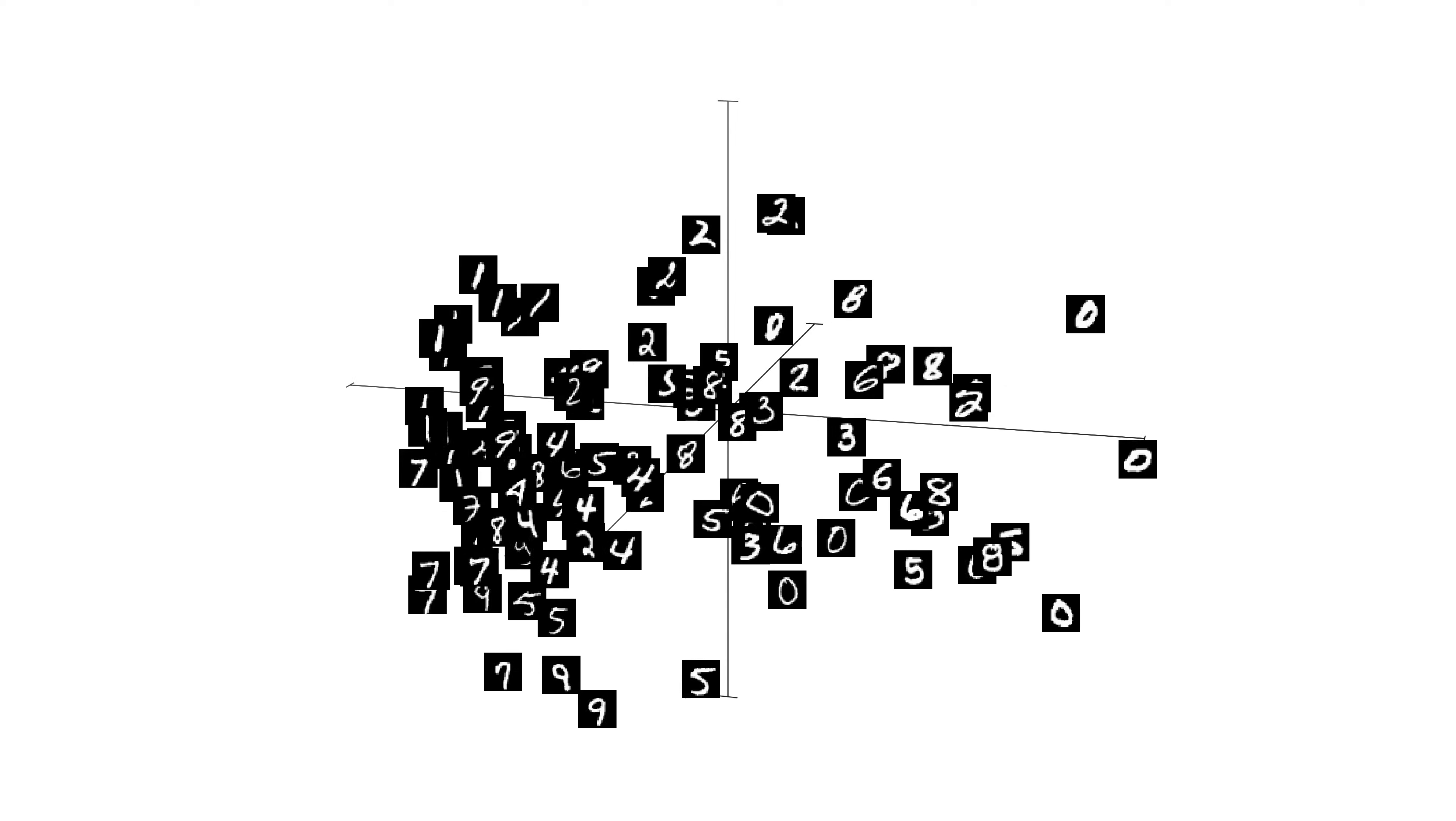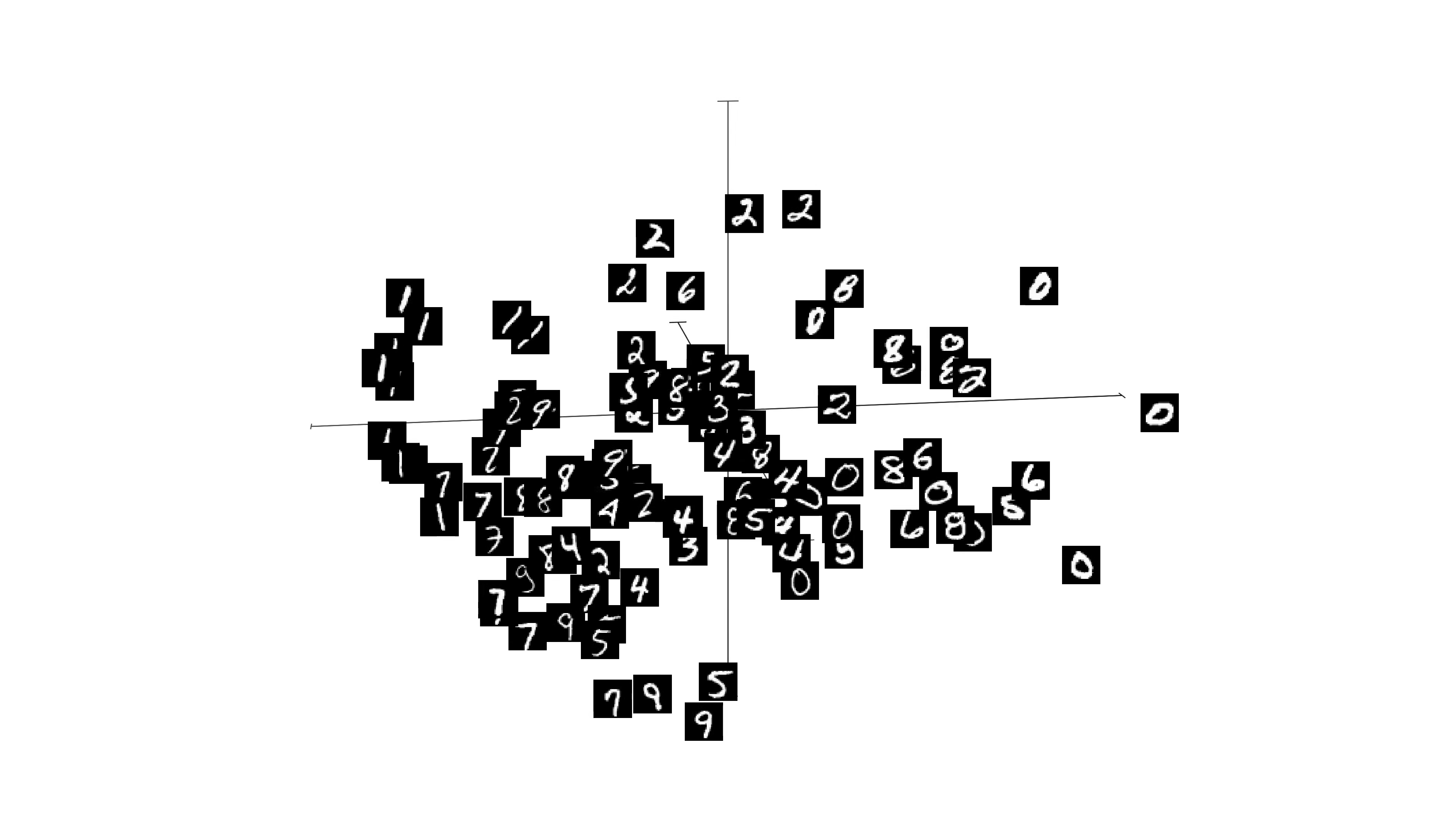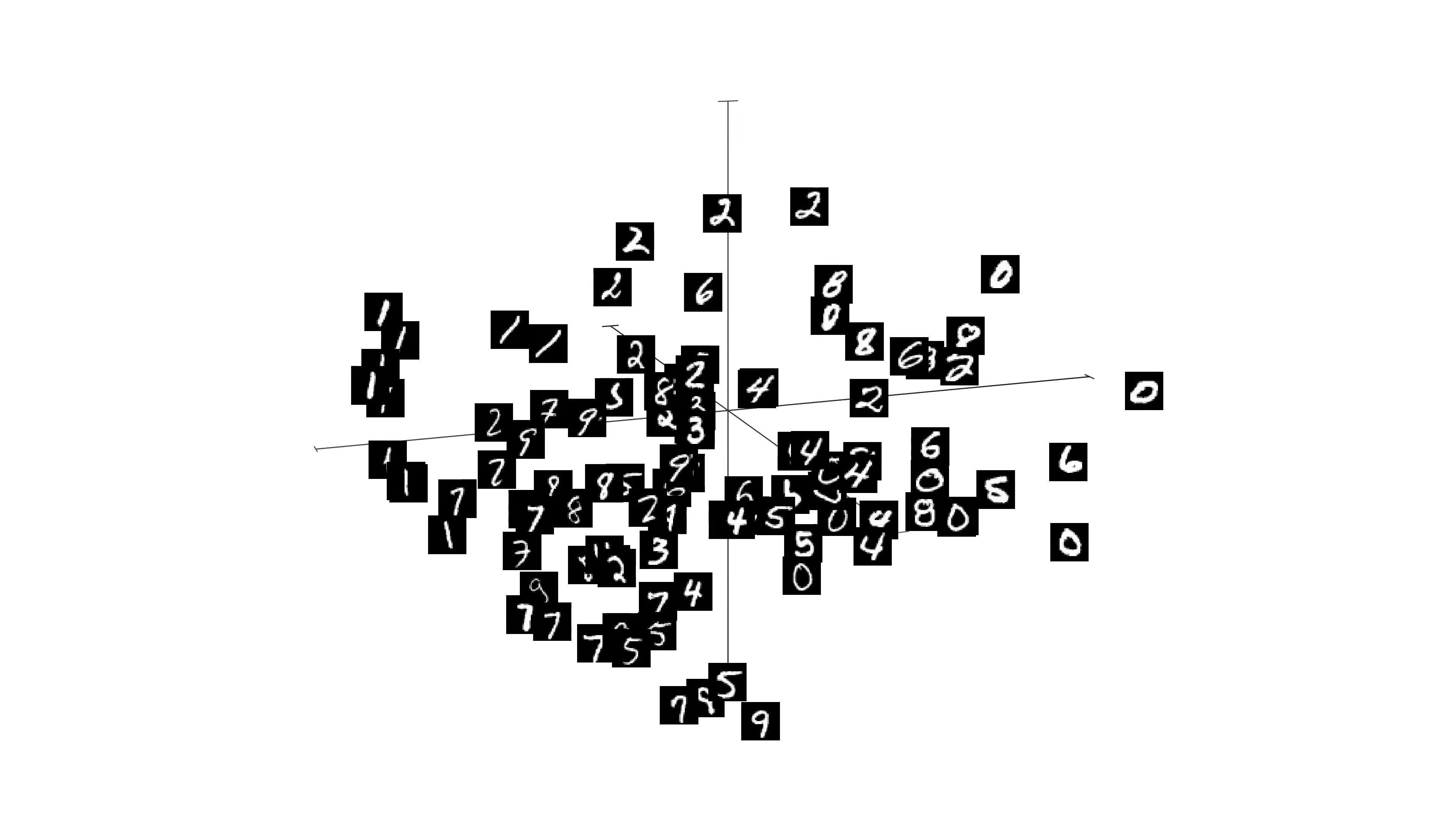You don't need to understand PCA, but it basically linearly projects the data to a lower dimension such that it maintains the maximum amount of variability or structure. Now let's see the neural network do its job.